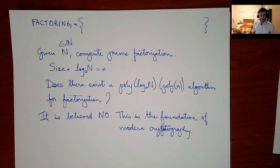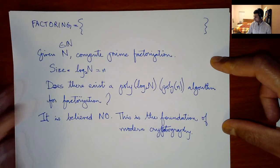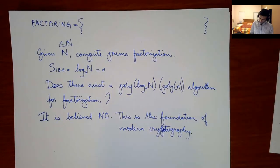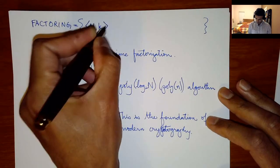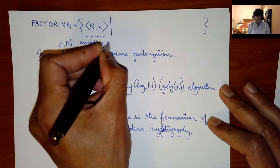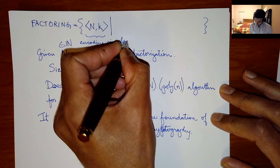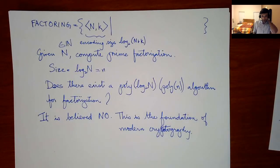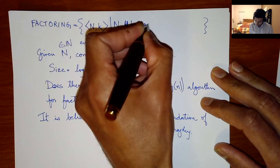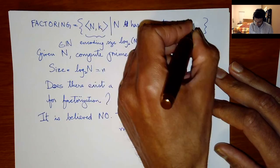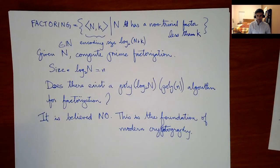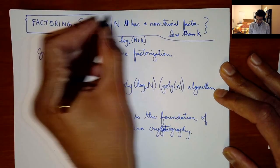We believe factoring does not have a polynomial-time algorithm. A common mistaken statement: people who say factoring is NP-complete are wrong. Because if factoring were NP-complete, then NP would equal co-NP, which we don't believe. Why don't we try to prove factoring is NP-complete to give more confidence in cryptography? Because factoring is in NP ∩ co-NP, and NP-completeness of factoring would imply NP = co-NP.